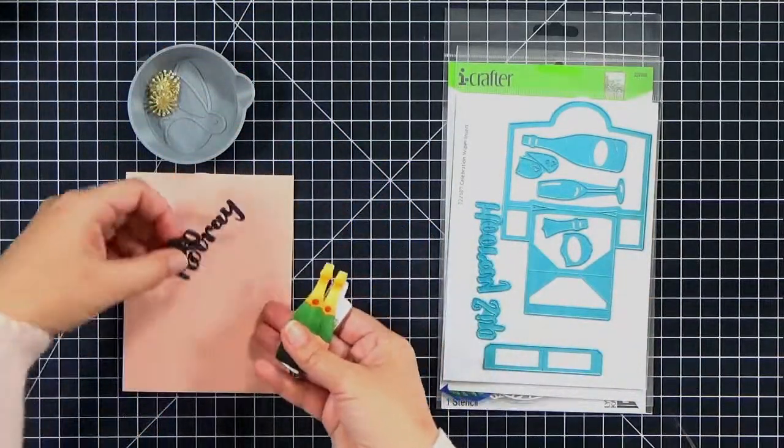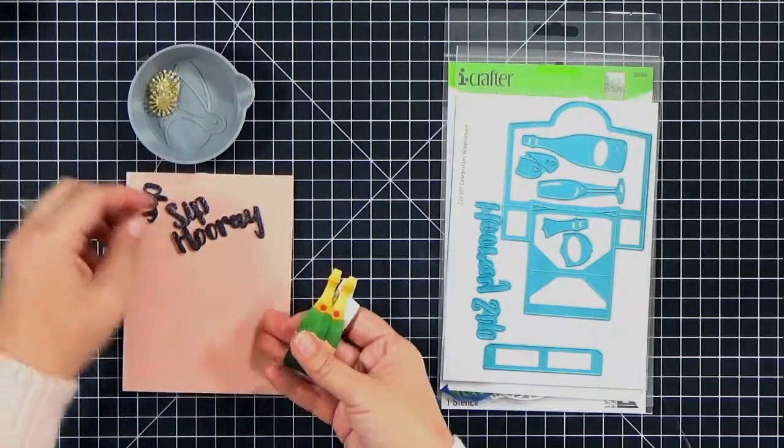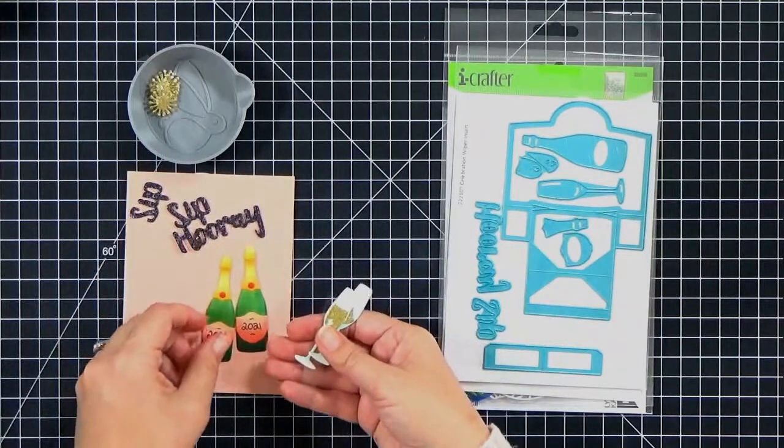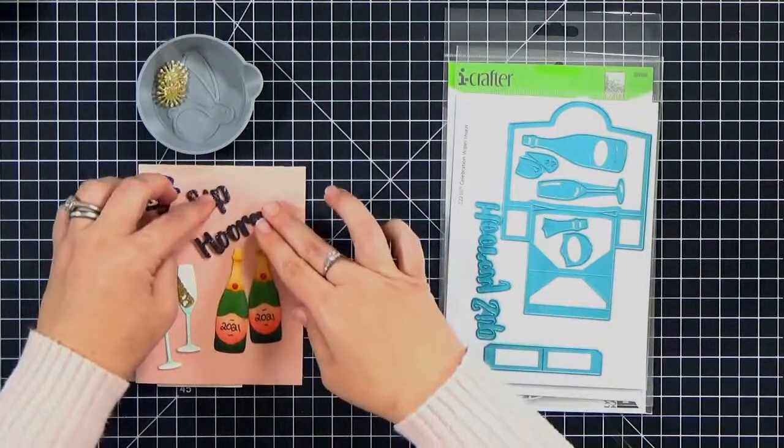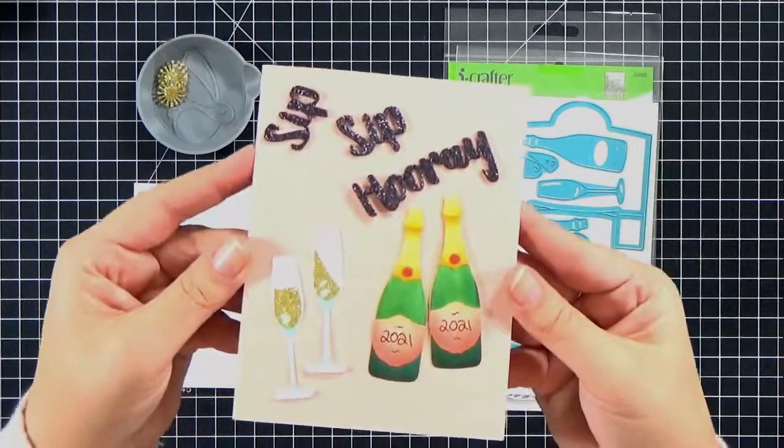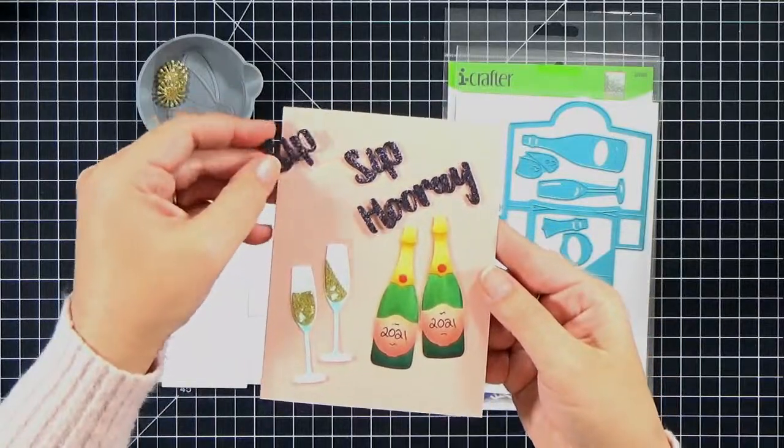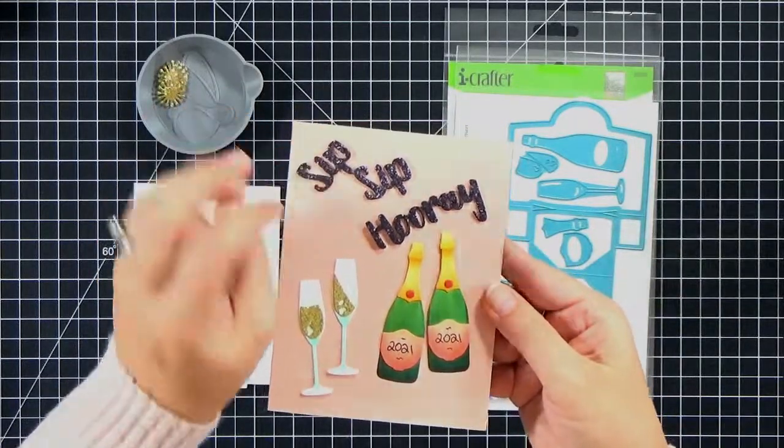You can do either way. If you're going to use wiper blades, I would suggest using the same color as your card base so that they kind of blend in. I like the acetate because it's clear. Now I have off camera gone ahead and die cut all of the pieces.